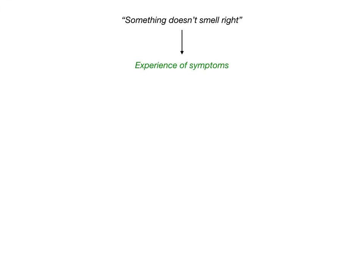Where do you start with diagnosing these disorders? If you're taking a test question and something doesn't smell right, that's where we start. You know they're asking about these disorders because choices A through E are all different disorders: somatic symptom disorder, conversion disorder, malingering, factitious disorder, illness anxiety disorder. The first question you need to ask yourself is: what is the experience of the symptoms? Are these symptoms being experienced involuntarily, or is the patient voluntarily producing them?